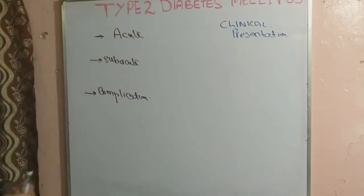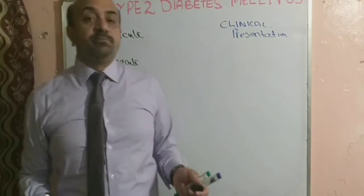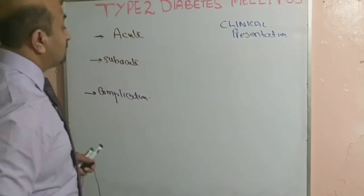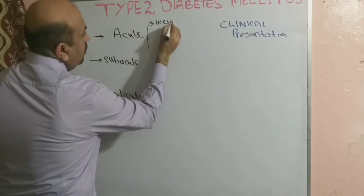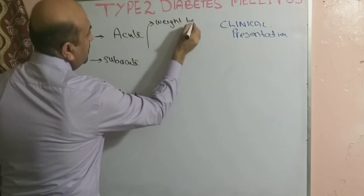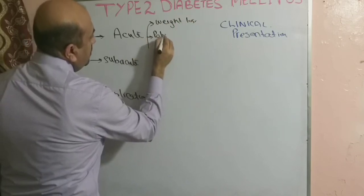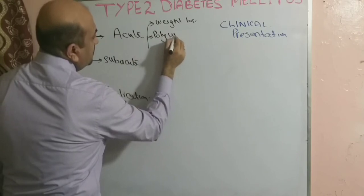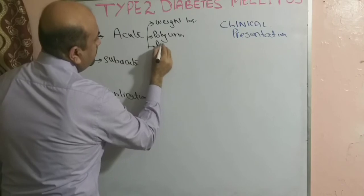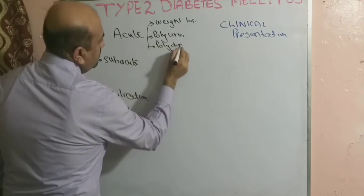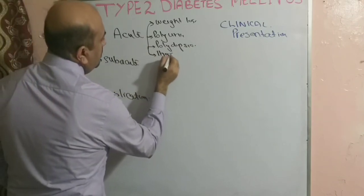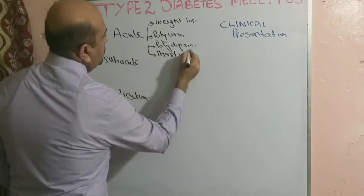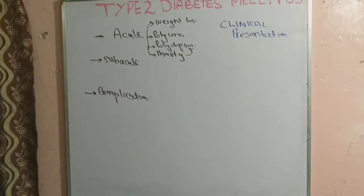The classical acute presentation — which happens most often in type 1 diabetes mellitus but can also occur in type 2 — includes weight loss, polyuria, polydipsia, and patients are always thirsty, asking for more and more water.